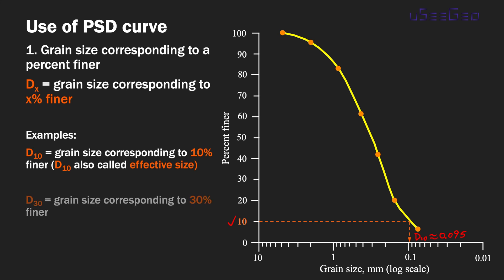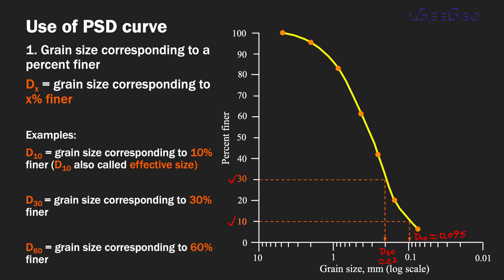Another example: D30 is the particle size corresponding to 30% finer. Starting from the 30% mark on the y-axis, the corresponding D30 value for this example is about 0.2 mm. Similarly, D60 is the grain size corresponding to 60% finer. Starting from the 60% mark on the y-axis, the corresponding D60 for this example is approximately 0.4 mm. All units are in millimeters.